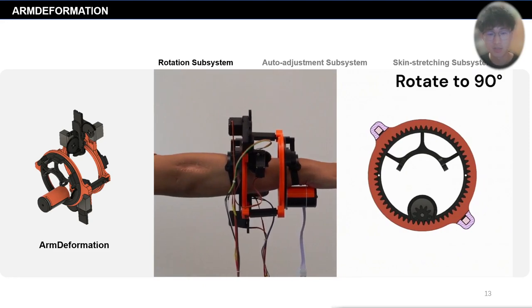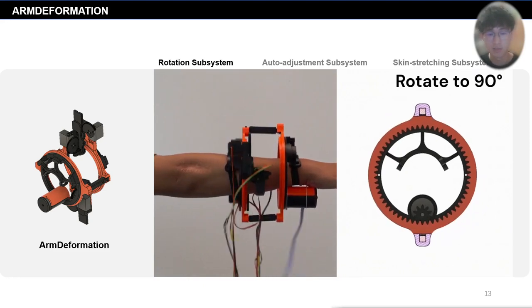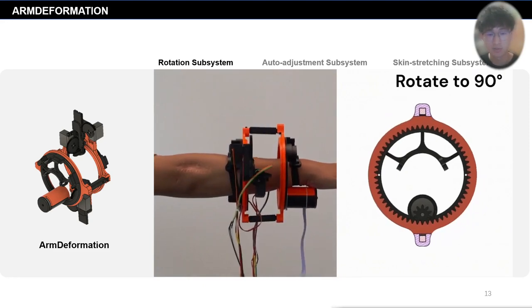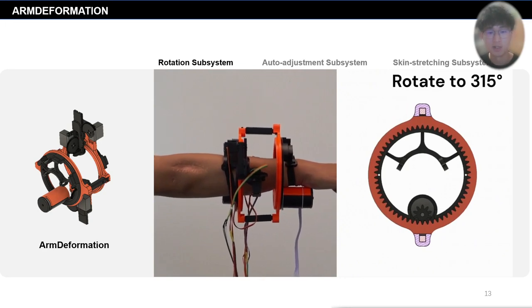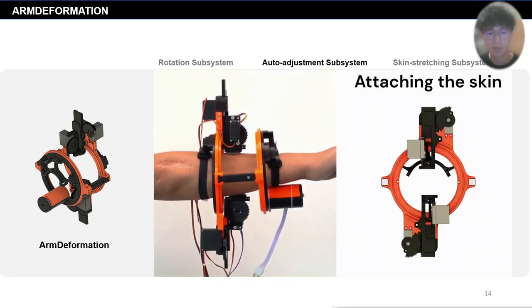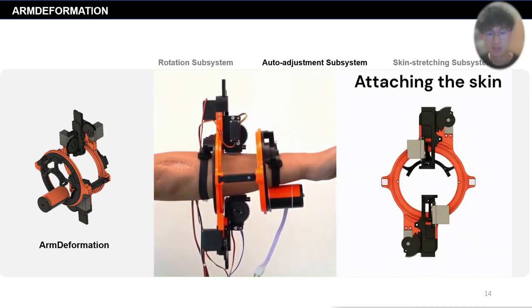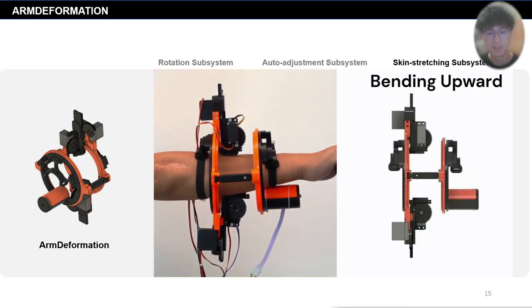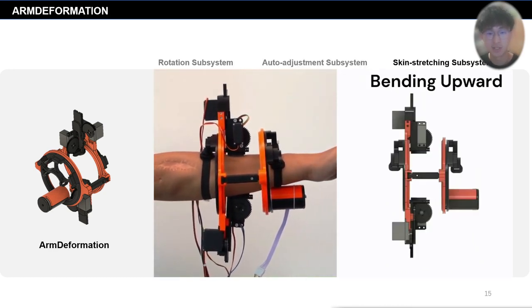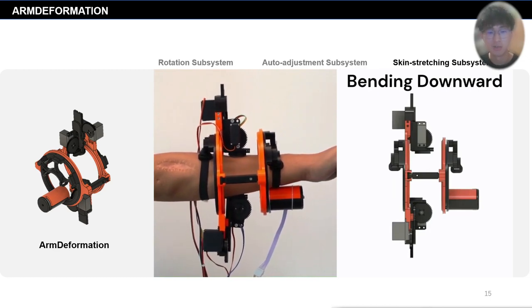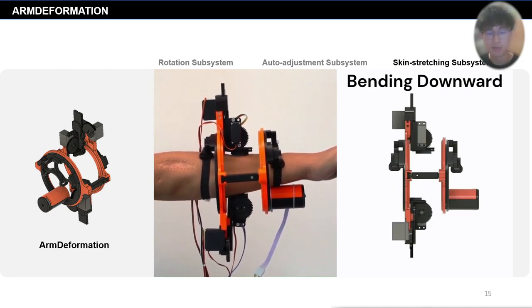The rotation subsystem can position the auto-adjustment and skin-stretching subsystems at any location around the forearm. The auto-adjustment subsystem can adapt to different human forearm sizes and attach the skin-stretching subsystem to the forearm skin. Lastly, the skin-stretching subsystem can stretch the forearm skin according to the degree of arm deformation.